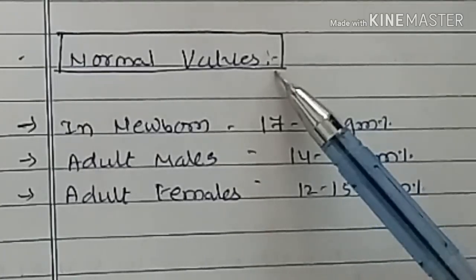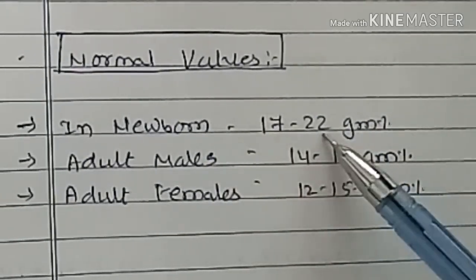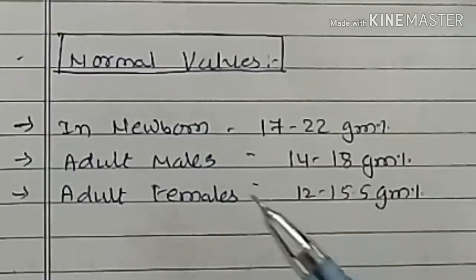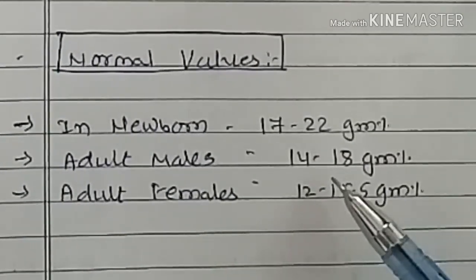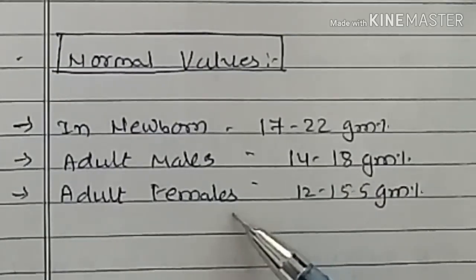Normal value of hemoglobin. In newborn, it is about 17-22 grams percent. In adult male, it is about 14-18 grams percent. In adult females, it is about 12-15.5 grams percent.